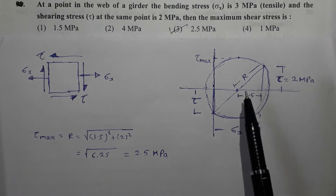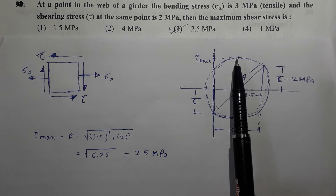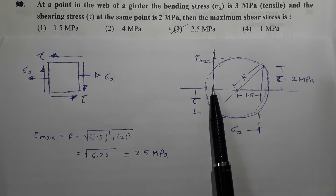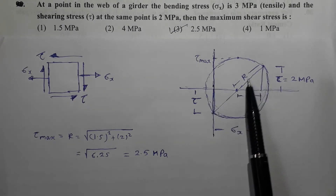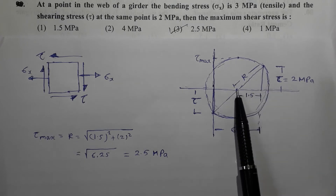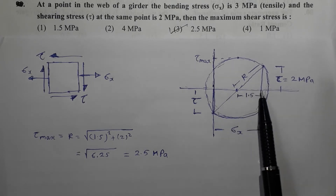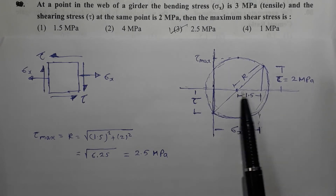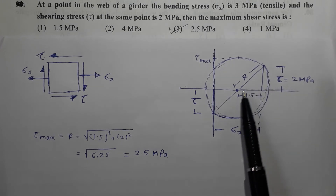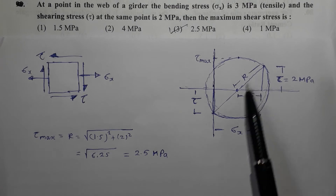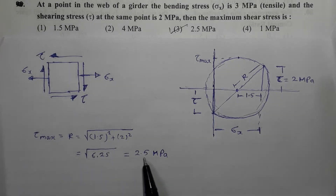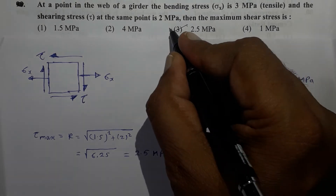It is asked to get the maximum value of shear stress. The maximum value of shear stress is obtained from this point, and this vertical distance is the maximum value of shear stress. It is going to be equal to the radius of the Mohr circle. The radius can be obtained using Pythagoras theorem. This distance is 1.5 because sigma x is 3 and it is half of that. Shear stress is 2 MPa. So R equals root of 1.5 squared plus 2 squared, which is root of 6.25, equal to 2.5 MPa. Option 3 is the correct option.